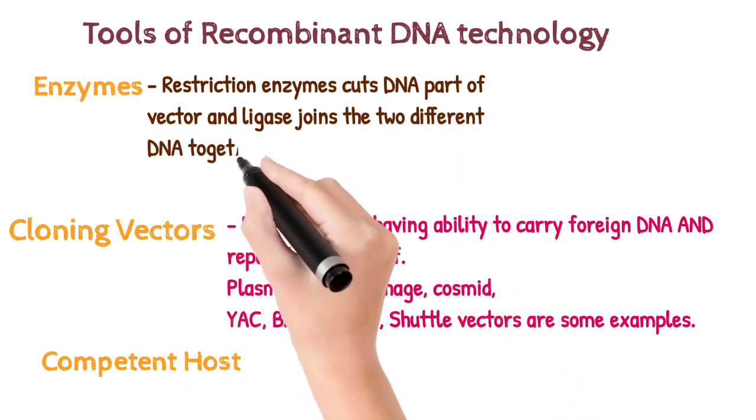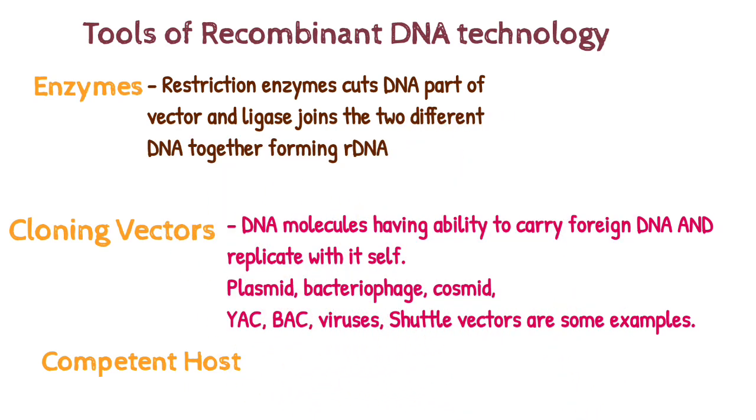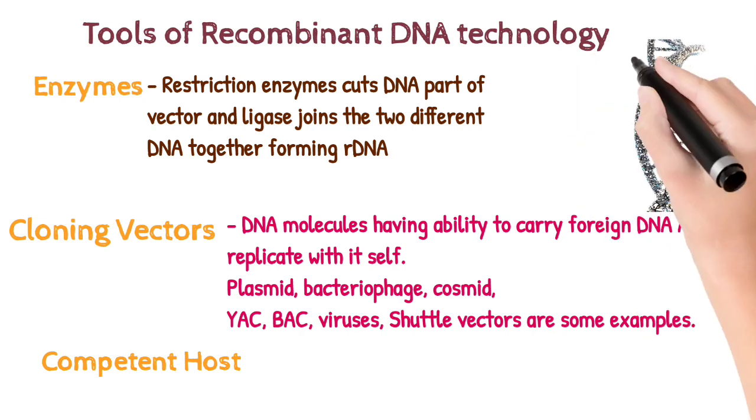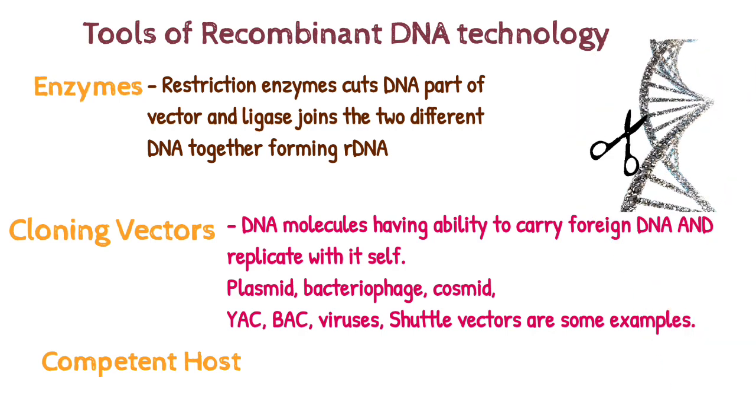Enzymes, for example restriction enzyme, cuts DNA part of vector, and ligase joins the two different DNA together forming recombinant DNA.